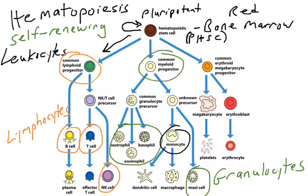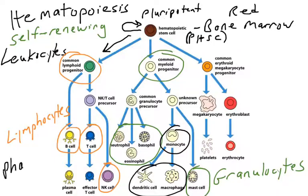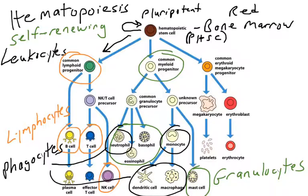Monocytes are leukocytes, but they're not terminally differentiated. They're present in the bloodstream, and when they enter tissues, they differentiate into either dendritic cells or macrophages, which can recognize and attack pathogens. Dendritic cells, macrophages, and neutrophils are all phagocytes — they perform phagocytosis, engulfing and destroying pathogens. We'll cover neutrophils and macrophages extensively in unit one, and dendritic cells in unit three.